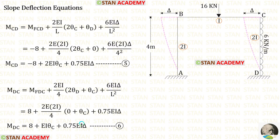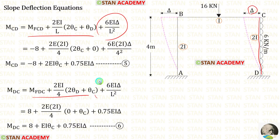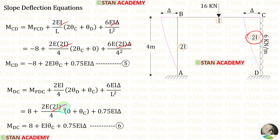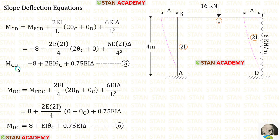Now let us make the slope deflection equations for column CD. Since column CD is subjected to sway, we have to add the sway moments to the equations. Let us apply the fixed end moments. The length of CD is 4, and the moment of inertia for CD is 2i, so instead of i we apply 2i. At point D, there is a fixed support, so theta D will be 0. Finally, in column CD we have made 2 equations.